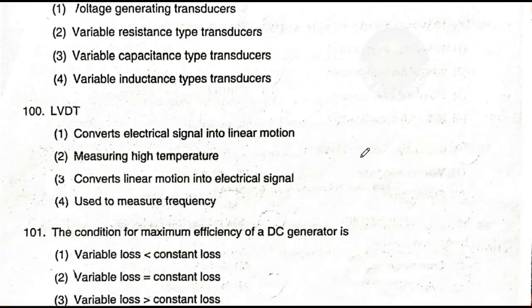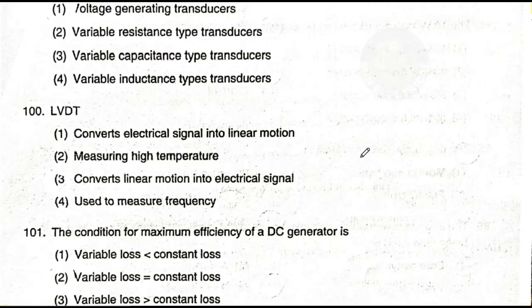Question number 100: LVDT — option one: converts electrical signal into linear motion; option two: measures high temperature; option three: converts linear motion into electrical signal; option four: used to measure frequency. The answer is option three — LVDT converts linear motion into electrical signal. LVDT stands for Linear Variable Differential Transformer.